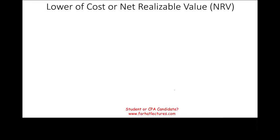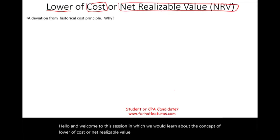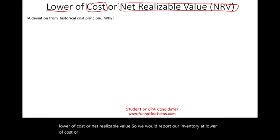Welcome to this session in which we would learn about the concept of lower of cost or net realizable value. We would report our inventory at lower of cost or net realizable value rather than the historical cost. Basically, this is a deviation from the historical cost.